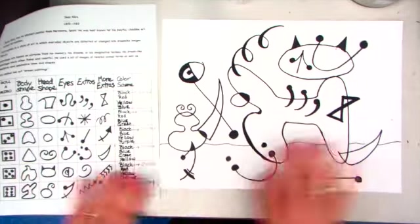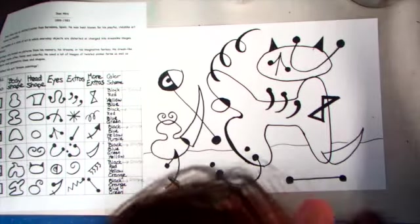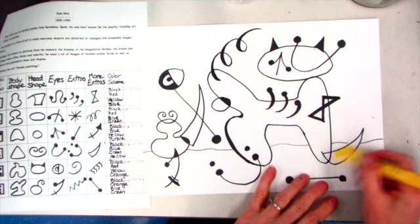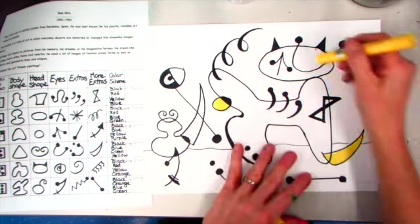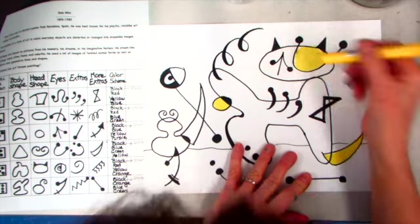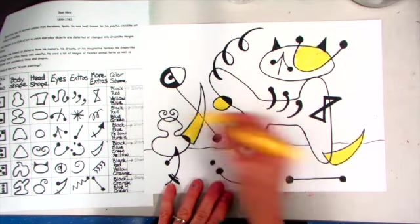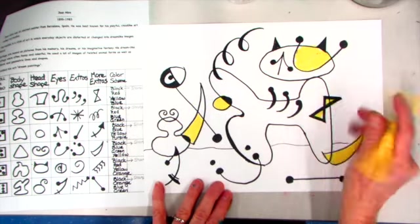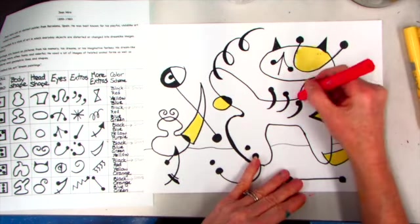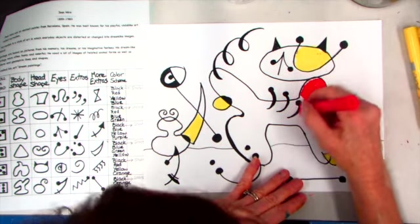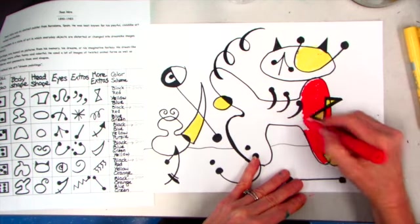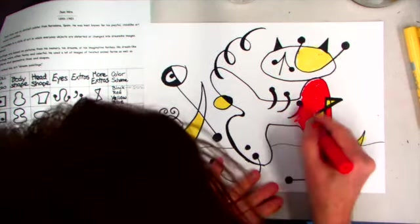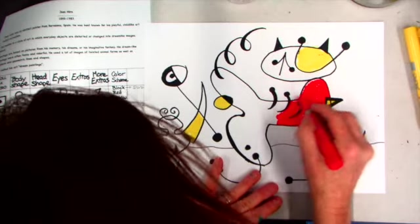And now I'm rolling the die to figure out my color scheme. I rolled a one, which means my color scheme is black, which is the Sharpie, yellow, blue, and red. I'm coloring in with paint sticks, but you're going to use whatever your substitute teacher chooses today. It could be crayons, it could be markers, colored pencils, or paint sticks.